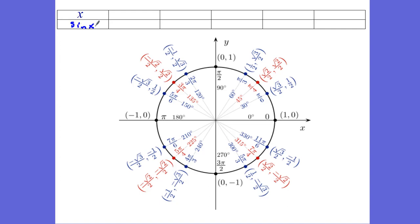Let's first take a look at a graph of sine — five different key points. Sine of zero is zero. Sine of pi over two is one. Then we're back at zero at pi. Then we're at negative one at three pi over two. Then we're back at zero at two pi. These are the five points I want to take along with me.